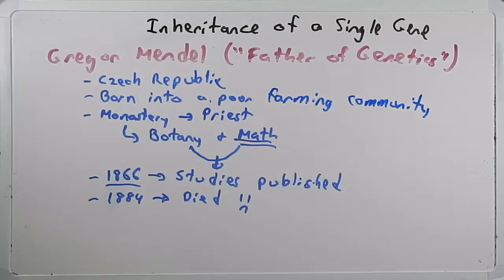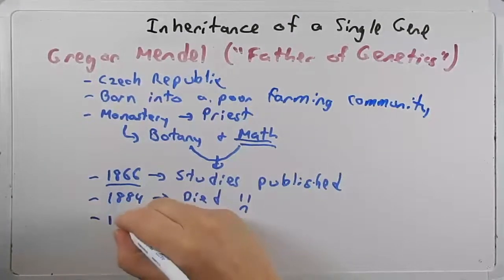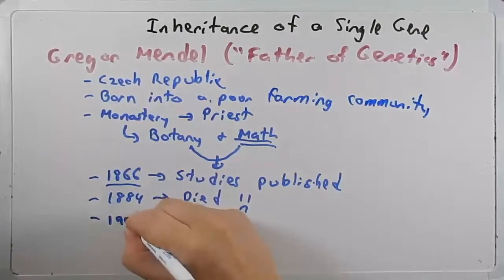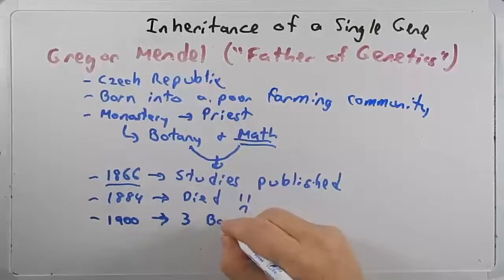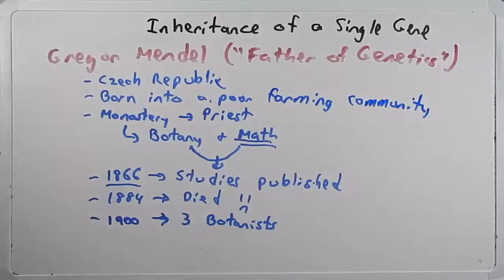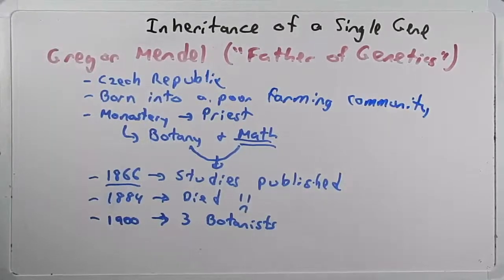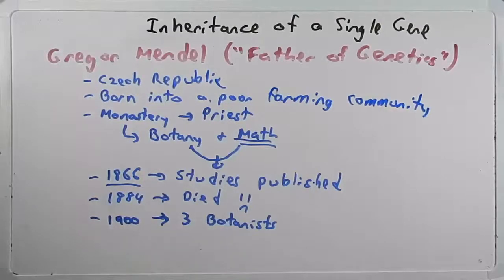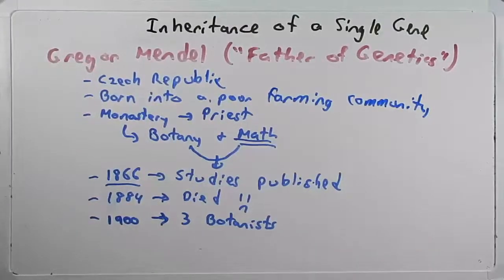Nobody had really read them. Turns out, and I won't go into great details to this because we need to move on, but in 1900, there were three other botanists who made similar findings that Mendel found. And when they started looking into the literature, they discovered Mendel's work. And to their credit, they could have just hid Mendel's work and took the glory of it, but they rightfully gave him credit for being the first to make these discoveries. And so it wasn't really until 1900 that he was formally recognized for his findings.